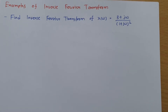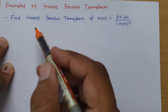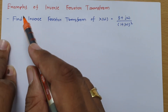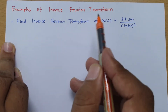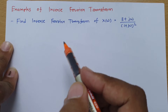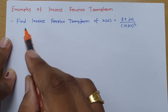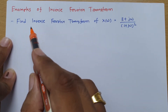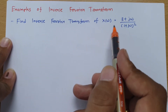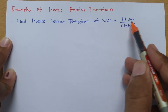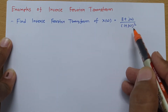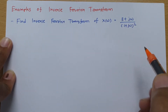Welcome to the Signal and System lecture series. In this session I will be solving three different examples to calculate the inverse Fourier transform. The first question is: find the inverse Fourier transform of X(Ω) = (3 + jΩ) / (1 + jΩ)².